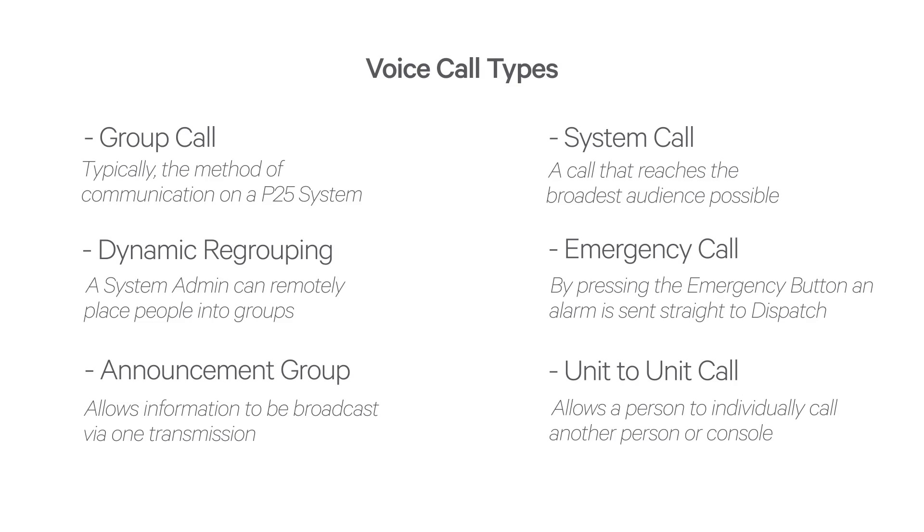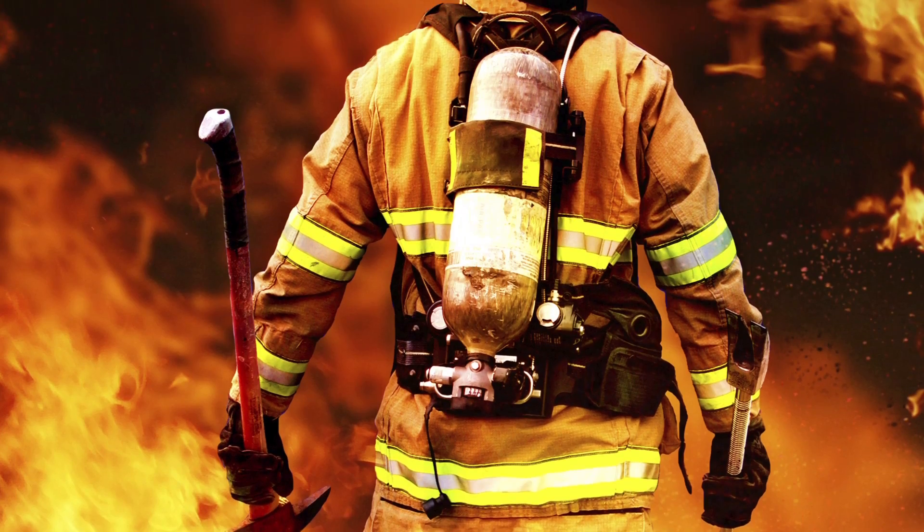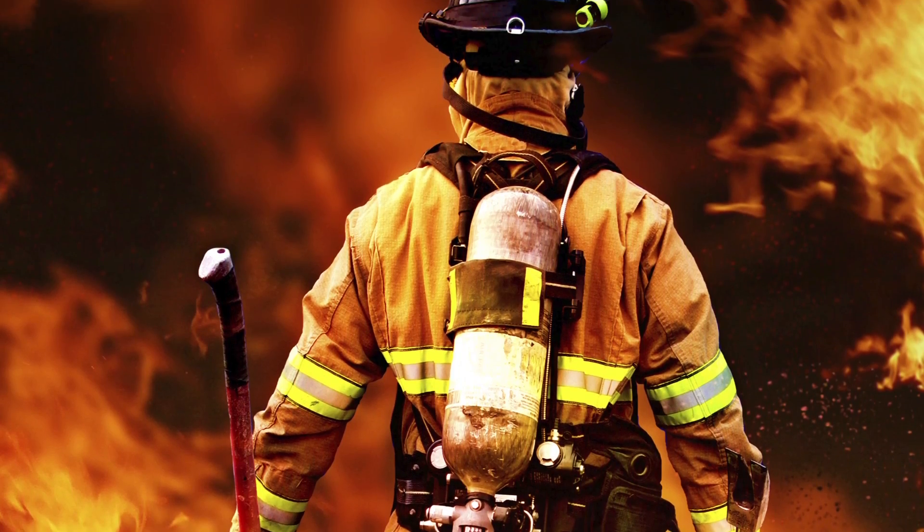Unit-to-unit calls are typically a longer duration than a single over to a talk group and therefore occupy radio channels for a longer period of time. The ability to make unit-to-unit calls is under the control of the system administrator and they may choose to limit who has access to this feature. In addition to unit-to-unit calls, a P25 network can allow dialling a phone call from a radio unit. This can be valuable when working in areas where cell phone coverage is not available or hazardous locations prevent the use of cellular phones.